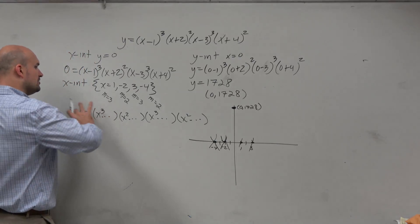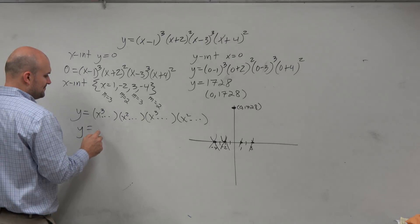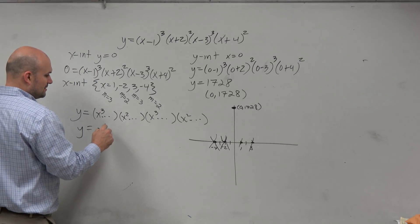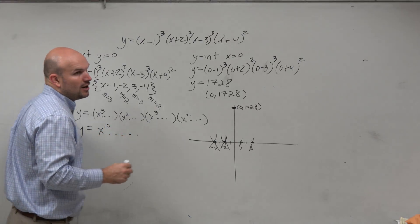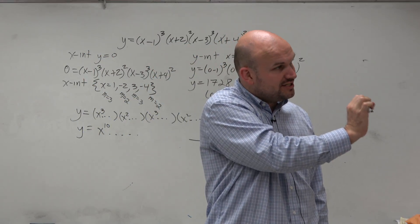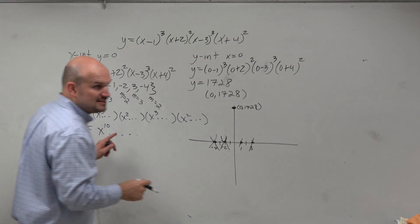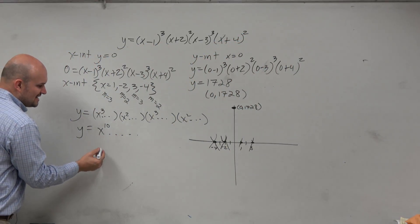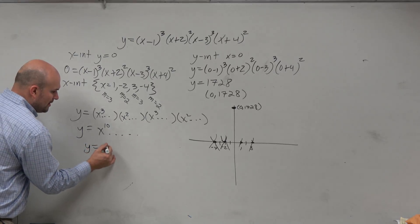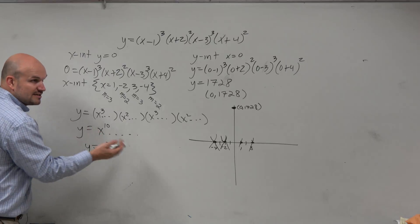Now that we know that my power is even and the coefficient is positive, can we determine what the end behavior is? It's the same here. Guys, this has the same end behavior as x squared. Do you know what that graph looks like? Can you determine what the end behavior is? Rise left, rise right. It's the same with this.